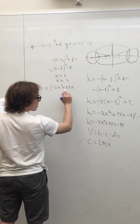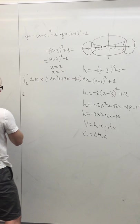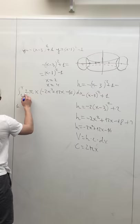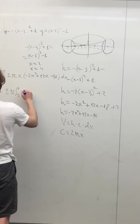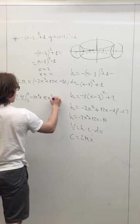So to start solving for the derivative, we can just take 2 pi out of the expression, and we can multiply this expression by x. So we get negative 2x cubed plus 12x squared minus 16x times dx.